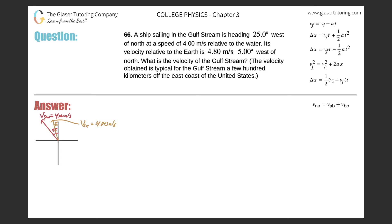A ship sailing in the Gulf Stream is heading 25 degrees west of north at a speed of 4 meters per second relative to the water. Its velocity relative to the earth is 4.8 meters per second at 5 degrees west of north. What is the velocity of the Gulf Stream?